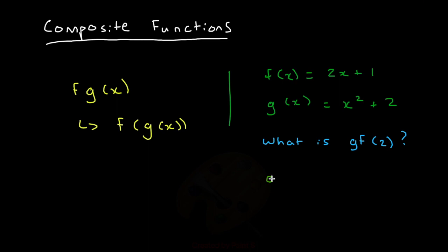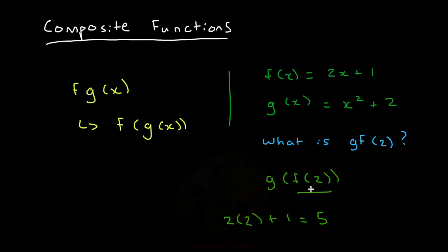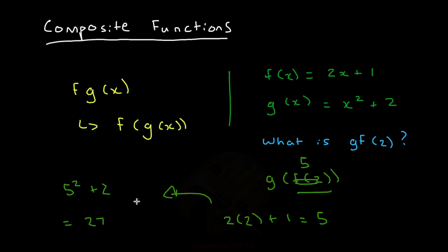gf(2) is the same as g of f(2). So first we take f(2) — just focus on this bit. f(2): put 2 into the function, so 2 times 2 plus 1 is equal to 5. So we can replace f(2) with 5. Now we have g(5). So what is g(5)? It's 5 squared plus 2, which is equal to 25 plus 2, which is 27. So our answer for gf(2) is 27.